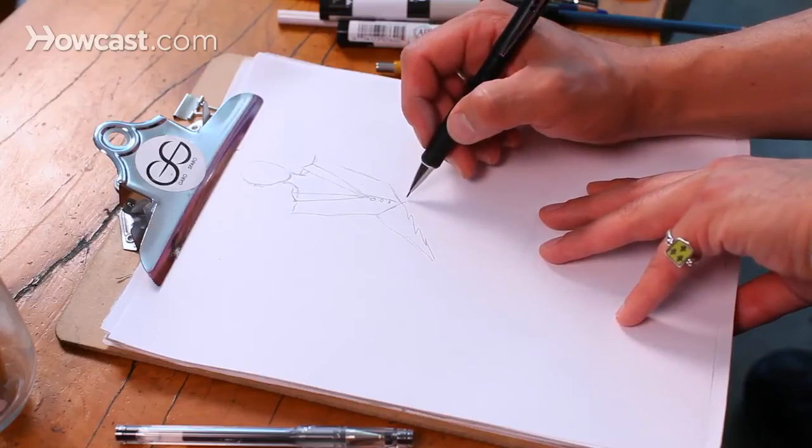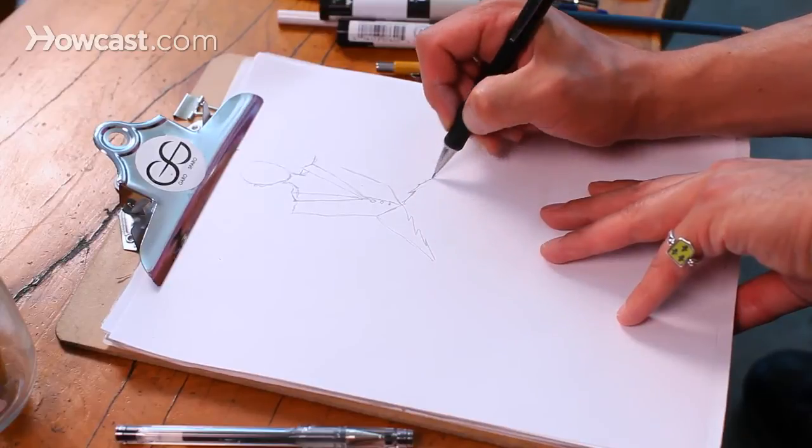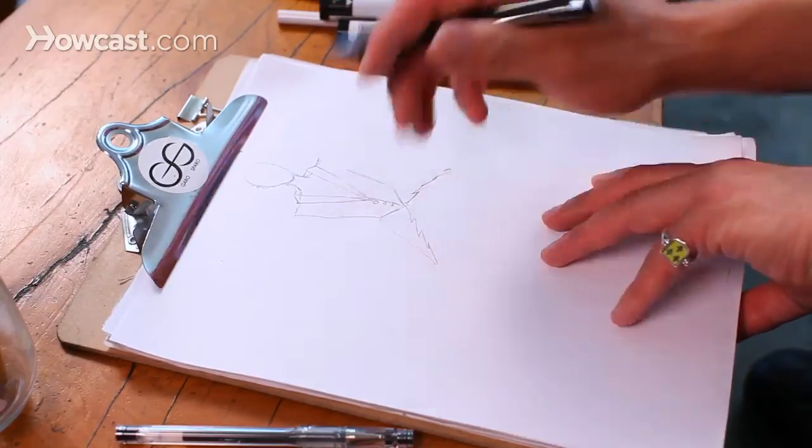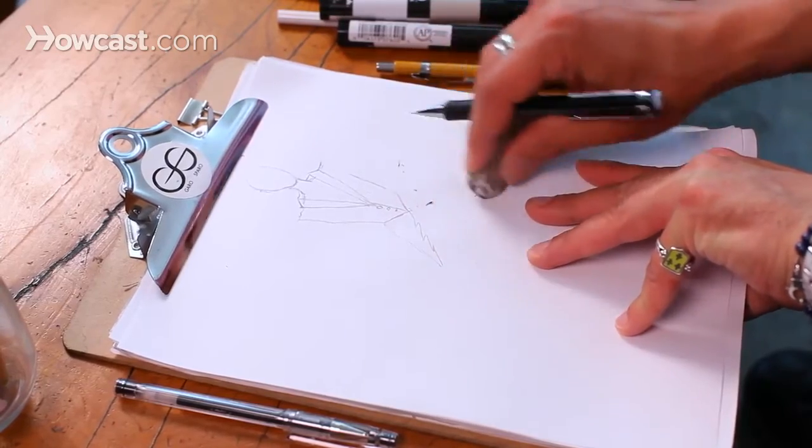And now, I'm going to go with a pleated peplum on the jacket. I just messed up that side, but that's why we do it in pencil first.